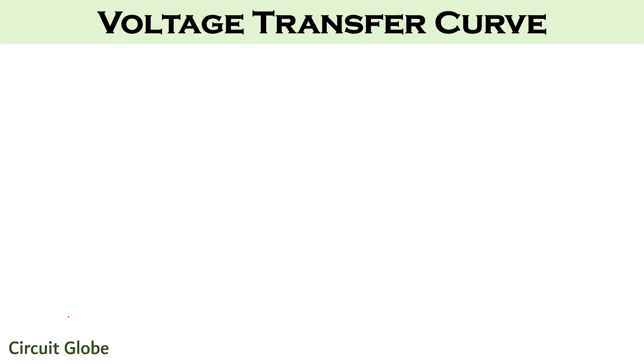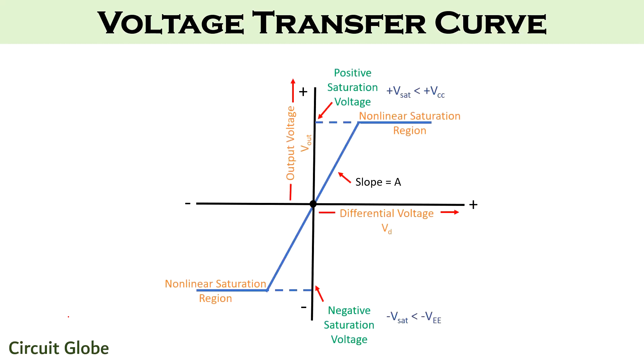Now, have a look at the voltage transfer curve of operational amplifier. This curve is drawn between output voltage V0 and differential voltage Vd, keeping the gain of the amplifier A constant. This curve is ideal voltage transfer curve as it is formed by assuming that the output offset voltage is zero.